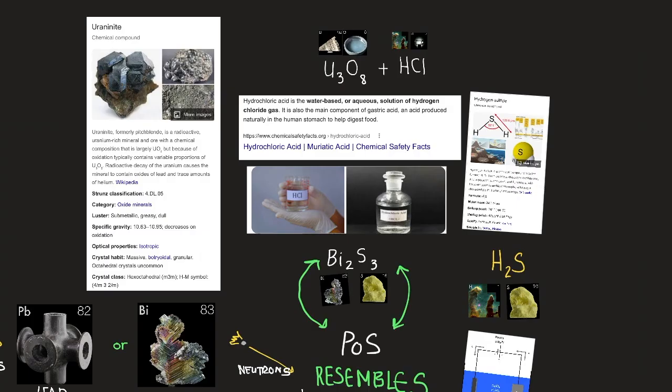So polonium is usually isolated from byproducts of the extraction of radium from uranium minerals. In the chemical solution, pitchblend ore is treated with hydrochloric acid, HCl, which consists of the elements hydrogen and chlorine. And the resulting solution is treated with hydrogen sulfide, which consists of the elements hydrogen and sulfur, to precipitate polonium monosulfide, or PoS.